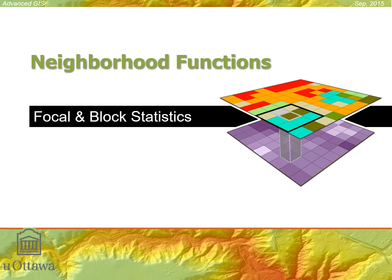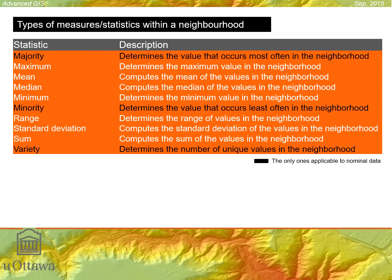Now that we know what a neighborhood is, we'll look at neighborhood functions, specifically focal and block statistics. After that, you decide what type of summary measure you want to create from the cells within your neighborhood for each cell in the output raster. We have two types. The black ones — majority, minority, and variety — are applicable to nominal data, differences of kind, things like land cover and land use.